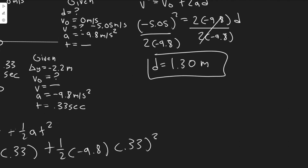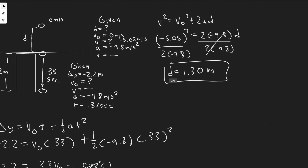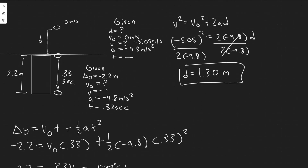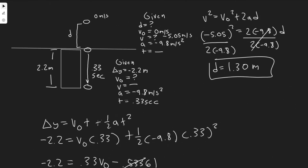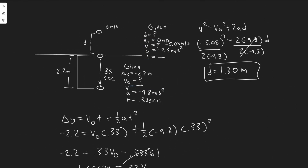That's rounded to 1.30 meters — that's the distance above the window from which the stone was dropped, and that's your answer. All we did in this problem was split it into two parts, then use the v sub 0 from the window interval as the final velocity in the first part. You just have to understand that you can plug variables from one interval into the other as long as they represent the same physical quantity, which in this case they did.